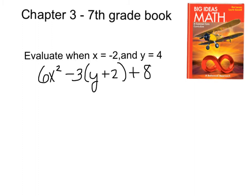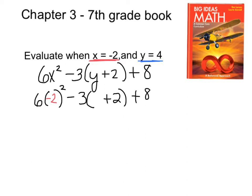Here's the example you should know from previous grades. Evaluate when x is negative 2 and y is 4. Here's your expression — pause the video and simplify it yourself. What you should have done is plugged in negative 2 for x and 4 for y. That will give us 6, and then make sure we start using parentheses. Notice I didn't put parentheses around the 4 because I'm not multiplying anything or taking anything to the second power here.